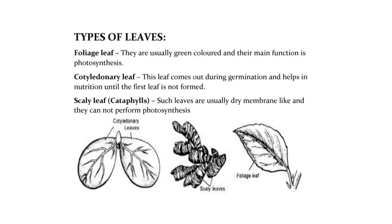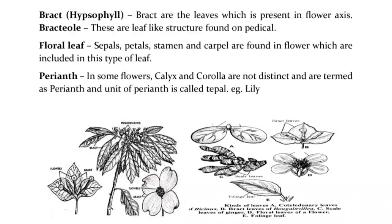Types of leaves: Foliage leaf — usually green-colored; main function is photosynthesis. Cotyledonary leaf — comes out during germination and helps in nutrition until the first leaf is formed. Scaly leaf (cataphylls) — usually dry and membrane-like; cannot perform photosynthesis. Bract (hypsophyll) — leaves present on the flower axis. Bracteole — leaf-like structures found on the pedicel. Floral leaves — sepals, petals, stamens, and carpels found in the flower are included in this type.